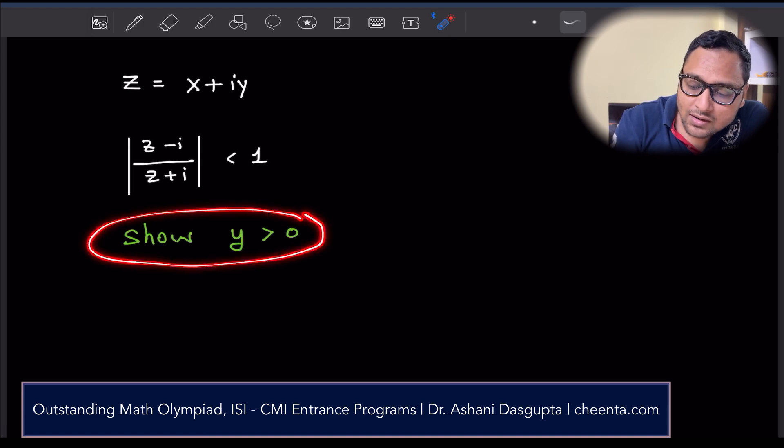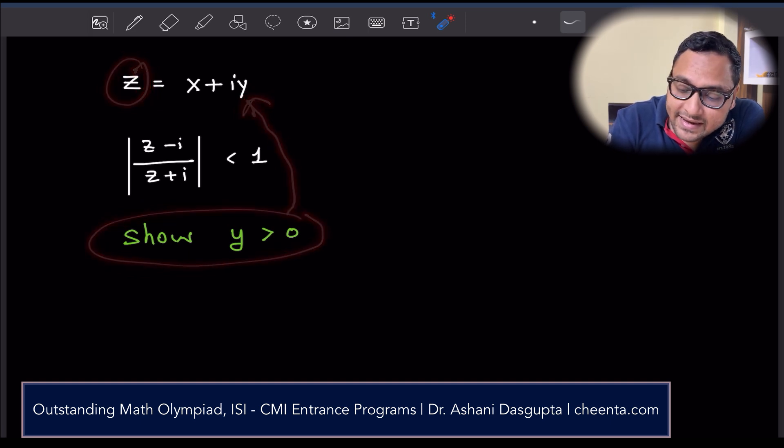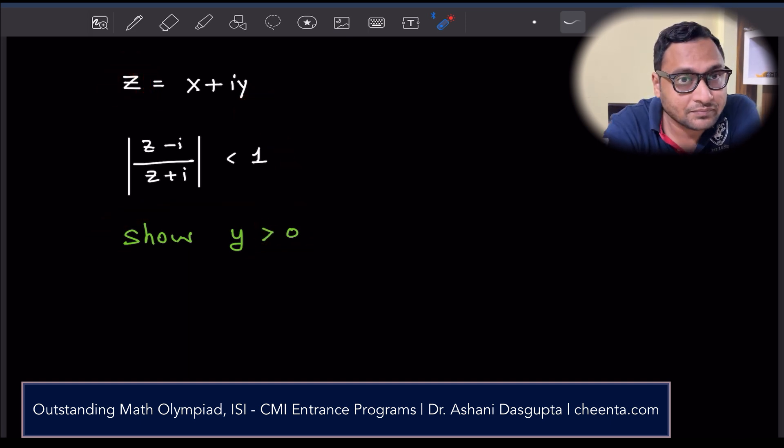We want to show that y, the imaginary part of the complex number, is greater than 0. That's the goal.